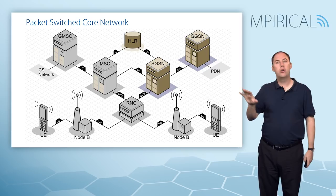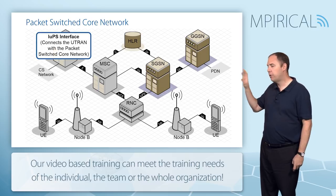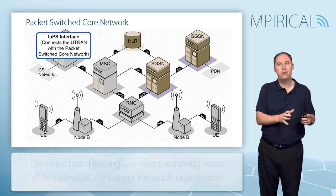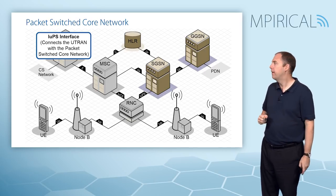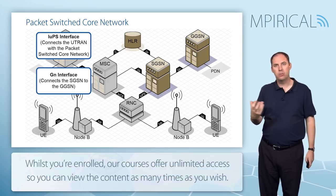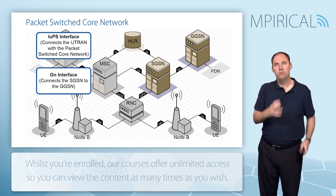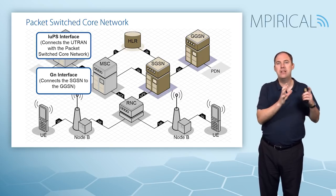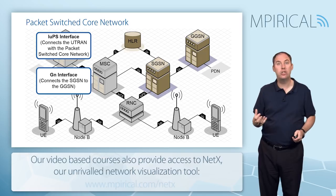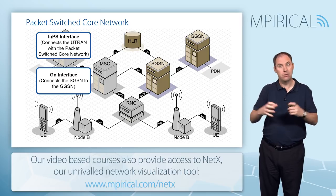Now let's look at the packet switch side to support data. We connect across the IU-PS — the interface for UMTS PS packet switched — connecting the radio access network to the packet switch core. We also have interfaces known as the Gn. Many interfaces on the packet switch side are called 'G' for historically GPRS, and 'n' for node. We have two types: the SGSN — Serving GPRS Support Node — and the GGSN — Gateway GPRS Support Node. The Gn allows connectivity between those.